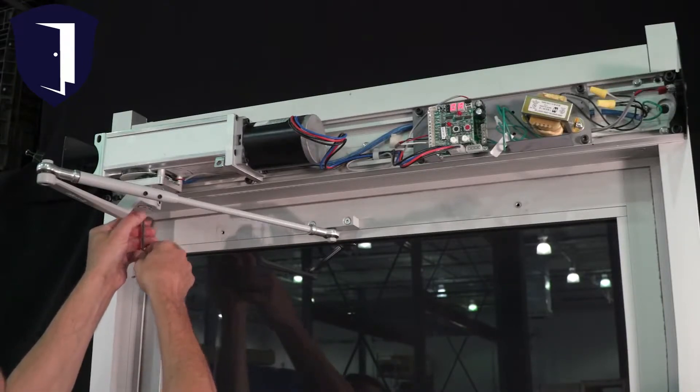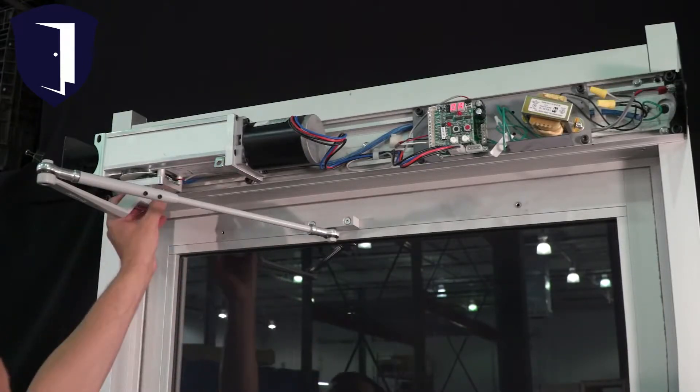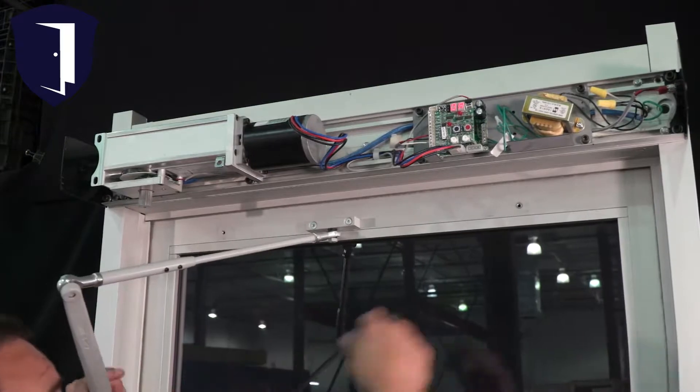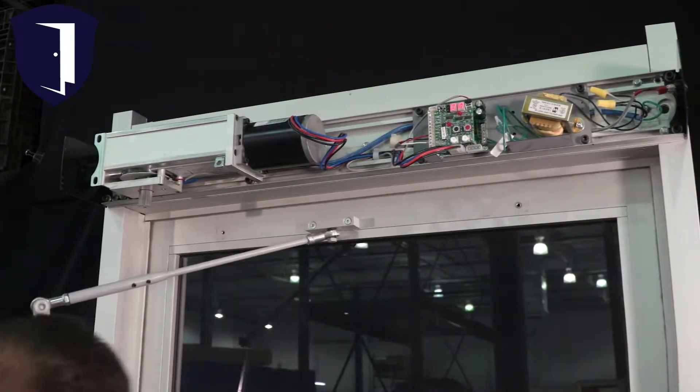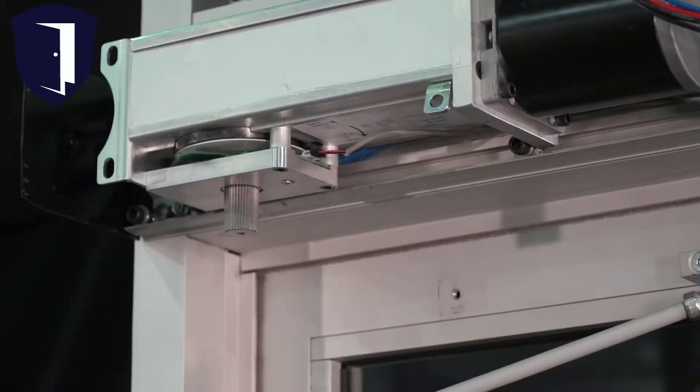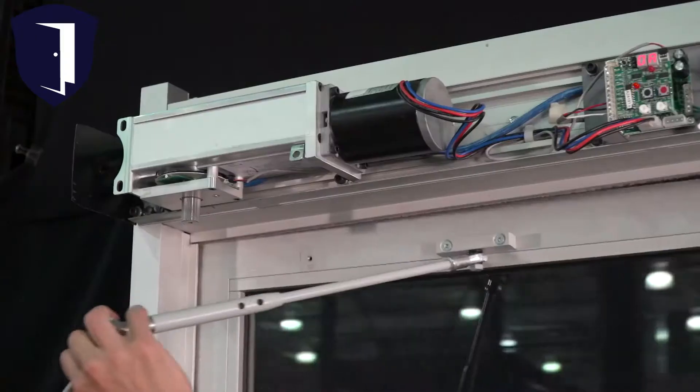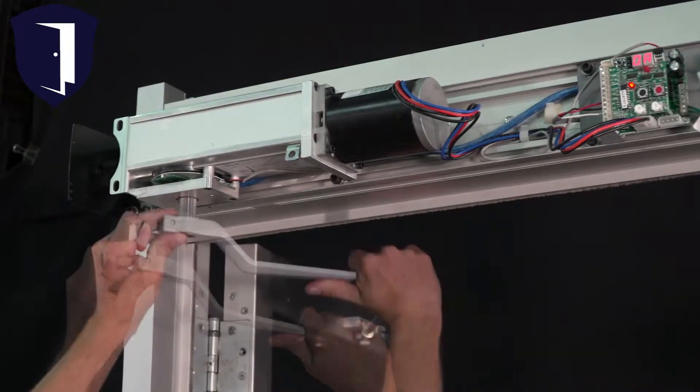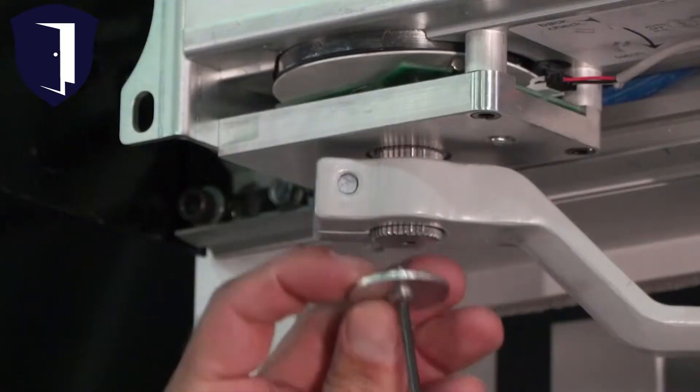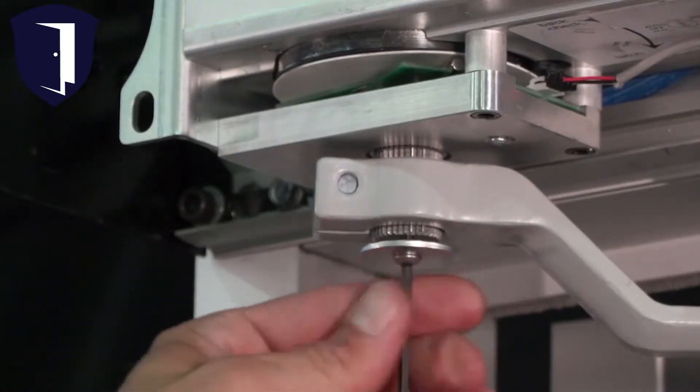Now, with the door at the fully closed position, remove the main handle from the spindle. Next, flip the operator switch to the hold open position and allow the spindle to turn until it stops. Then, push the door to its fully open position and reattach the handle to the shaft, securing with the screw and washer.